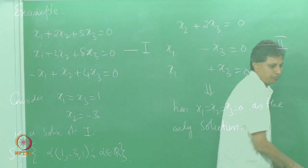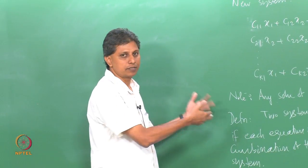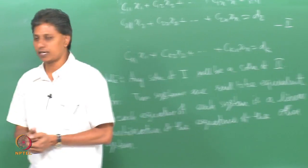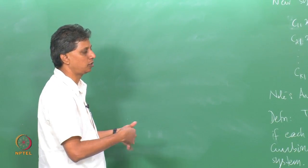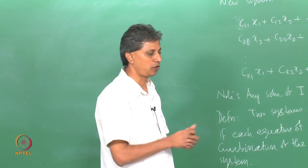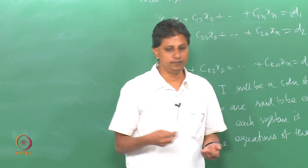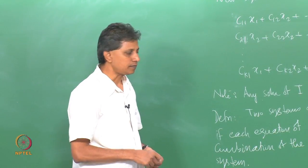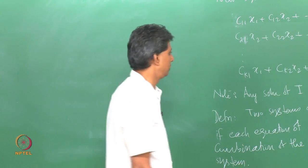We were discussing elementary row operations in the last class, and now we have been looking at equivalent systems. These notions are related: taking linear combinations of equations of a system amounts to performing certain elementary row operations or a sequence of elementary row operations. We will make this idea precise, but first let us recall the definitions of the elementary row operations.